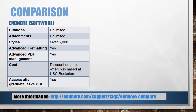With EndNote software, you can create your own citation styles through the advanced formatting menu, have additional tools for adding annotations to and organizing PDFs, and have continued access after you graduate or leave USC. Pricing changes annually, but there is a discount for students, staff, and faculty purchasing this software through the USC bookstore.